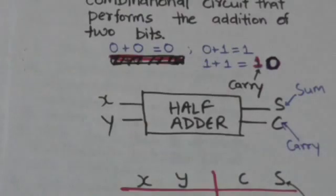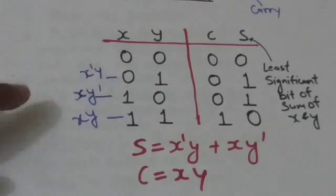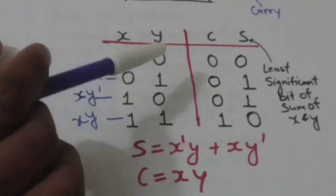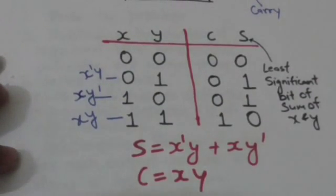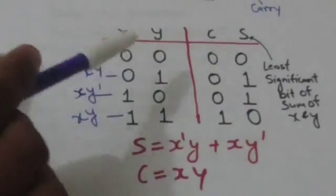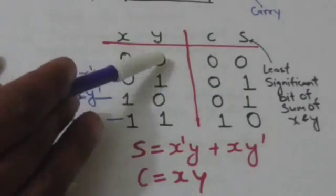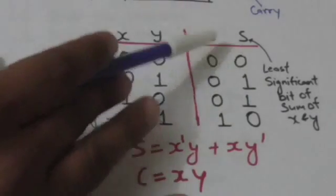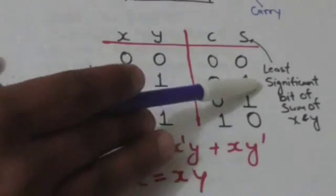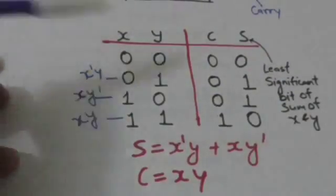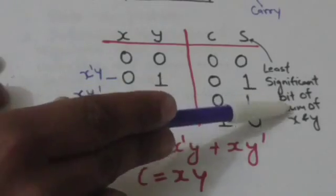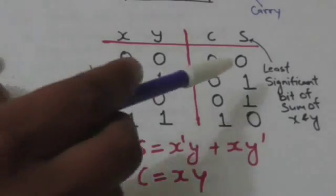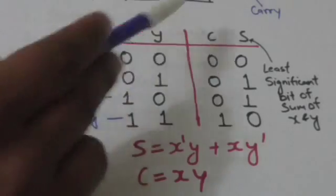Here is the truth table for the half adder, which defines the relationship between input variables and output variables. When the value of both X and Y is zero, S — which represents the least significant bit of the sum — will also be zero. No carry is produced, so the value of C is also zero.